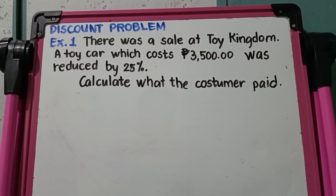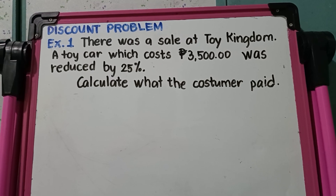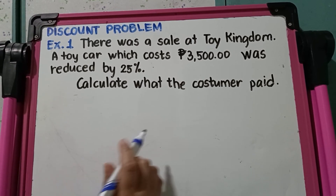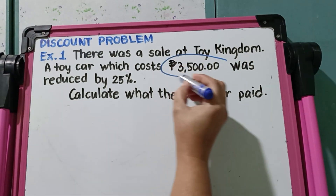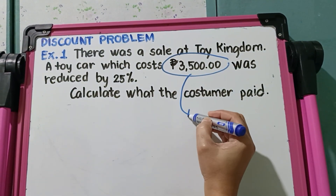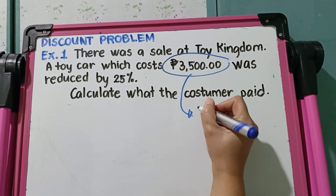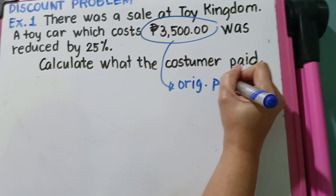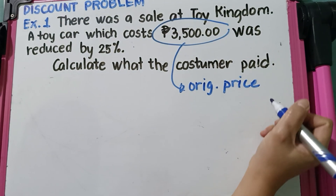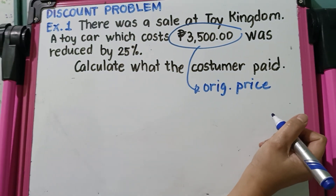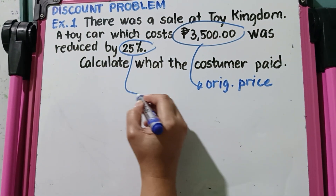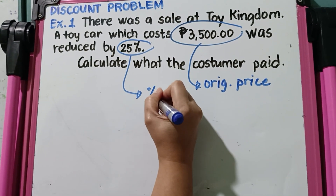To answer this problem, first thing we need to do is to identify the given. Based on the problem, we have 3,500 pesos, because this is the original price of the toy car. And we have 25%, which is the rate of discount.